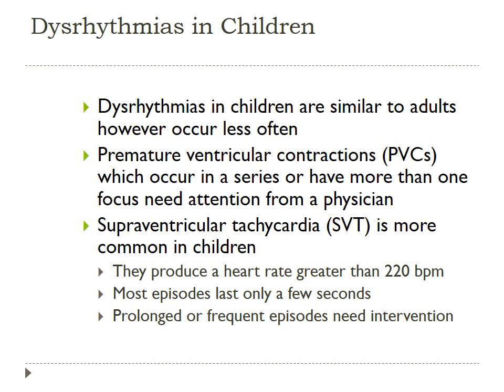For cardiac scoring, dysrhythmias in children are more similar to adults but occur much less often. Premature ventricular contractions occurring in a series or with more than one focus need physician attention, so document them clearly. SVT — supraventricular tachycardia — is more common in kids and can produce a heart rate greater than 220 beats per minute. Most episodes only last a few seconds, but prolonged or frequent episodes need intervention. If you see this on a polysomnogram, document it so the physician can address it.